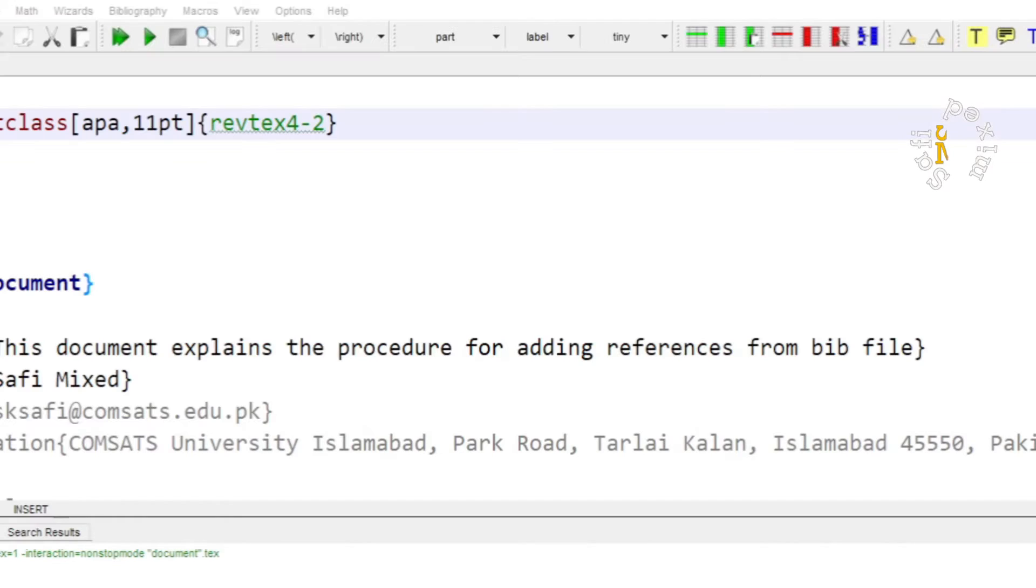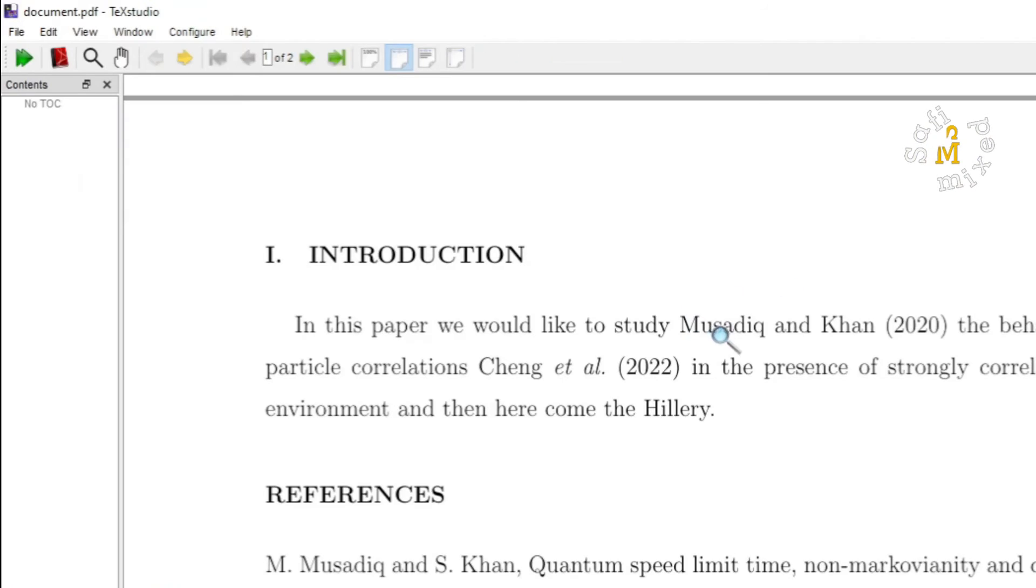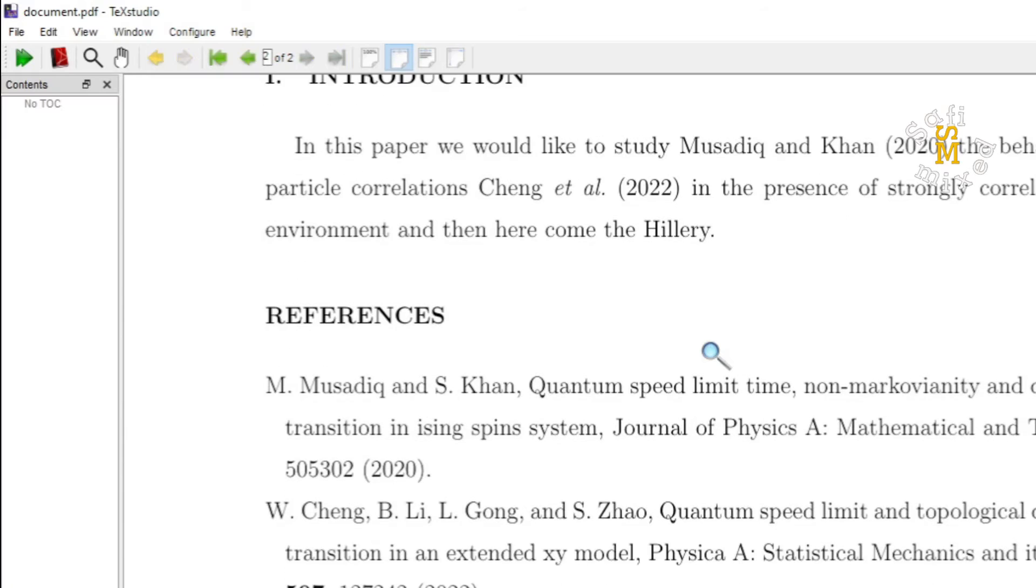I can further change by adding additional information like author year and build the document. Now you see here instead of numerical citation now the name of the author and the year is mentioned and here the numeric numbers are removed only the name of the author goes on.